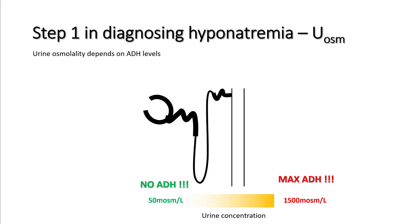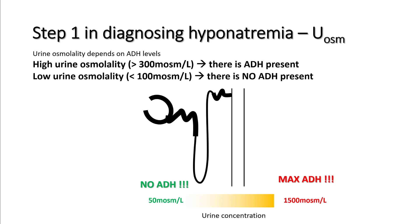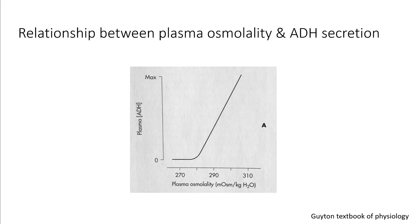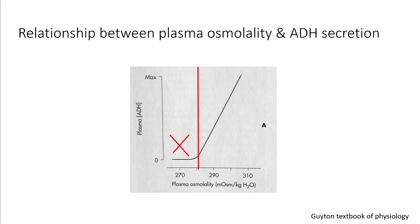In the absence of ADH the most dilute urine you can make is about 50 milliosmoles per liter. So step one in diagnosing hyponatremia is to order a urine osmolality, because it tells you if ADH is present or absent. High urine osmolality — more than 300 milliosmoles per liter — means ADH is present; low urine osmolality — less than 100 milliosmoles per liter — means no ADH is present. This figure shows plasma osmolality versus plasma ADH levels: ADH rises as plasma osmolality increases and drops as it decreases, with hardly any ADH below 280 milliosmoles per liter.